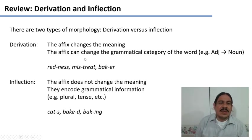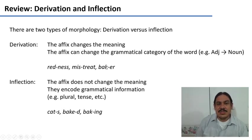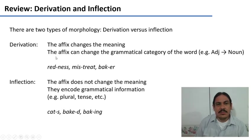Derivational affixes can also change the grammatical category of the word. For example, they can turn an adjective like 'red' into a noun like 'redness,' or turn a verb like 'bake' into the noun 'baker.' So these are derivational morphemes.